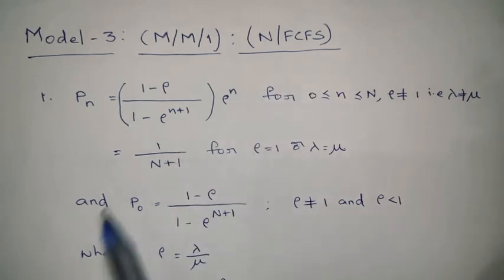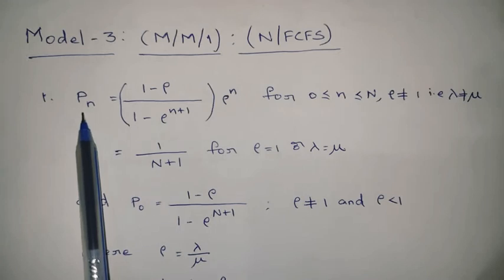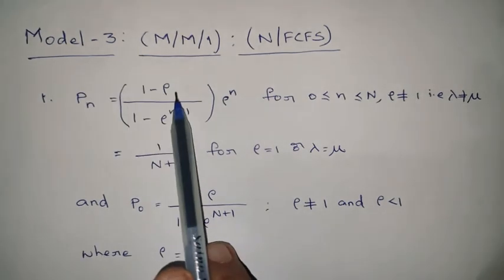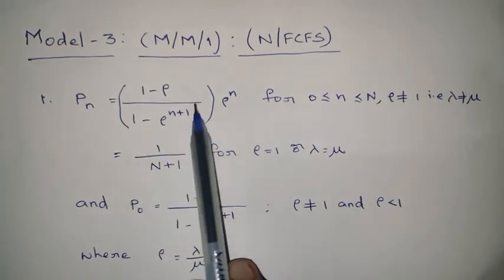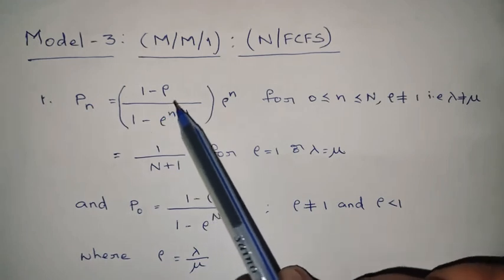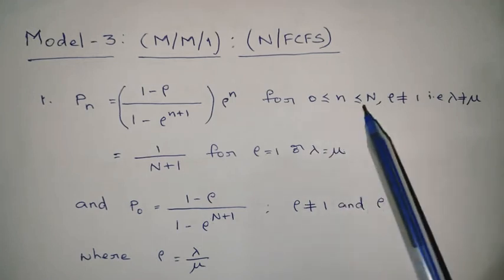We are going to discuss this third model. To solve third model problems, we need to know some key relations. The first relation is P(n) — the probability of n customers in the queue system — which equals (1 − ρ) / (1 − ρ^(N+1)) × ρ^n, where ρ is the traffic intensity. This formula is valid when n is between 0 and capital N.